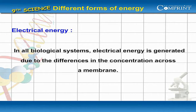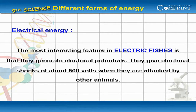In the nervous system, electrical potentials are generated and used for the transmission of information. In all biological systems, electrical energy is generated due to differences in concentration across a membrane. The most interesting feature in electric fishes is that they generate electrical potentials and give electrical shocks of about 500 volts when attacked by other animals.